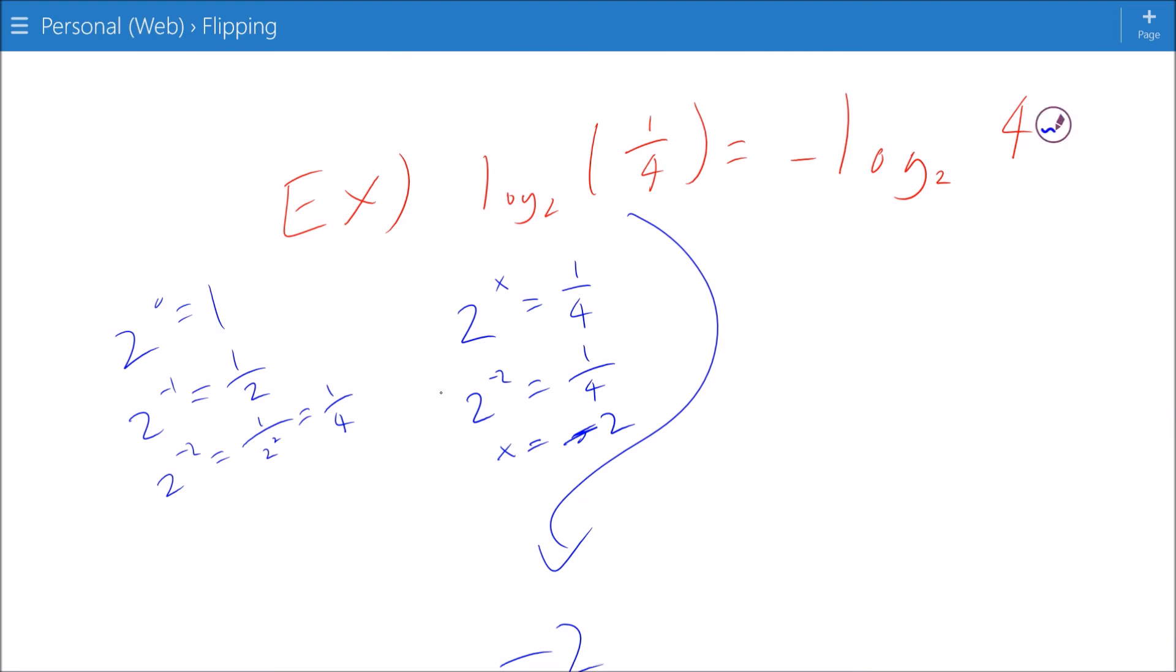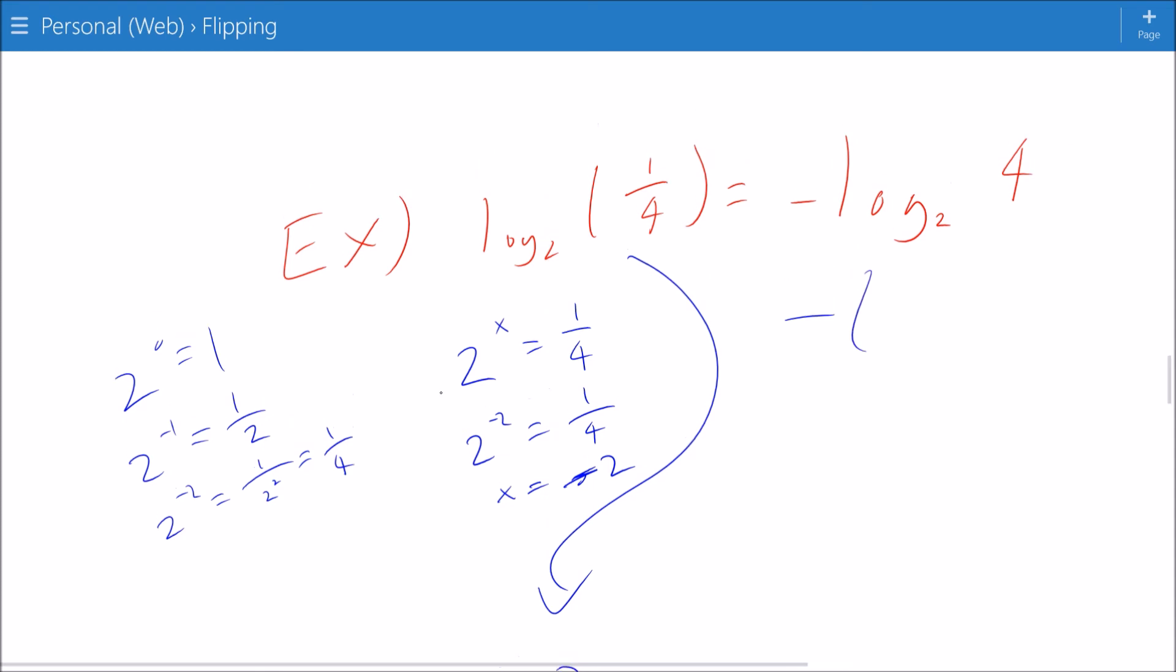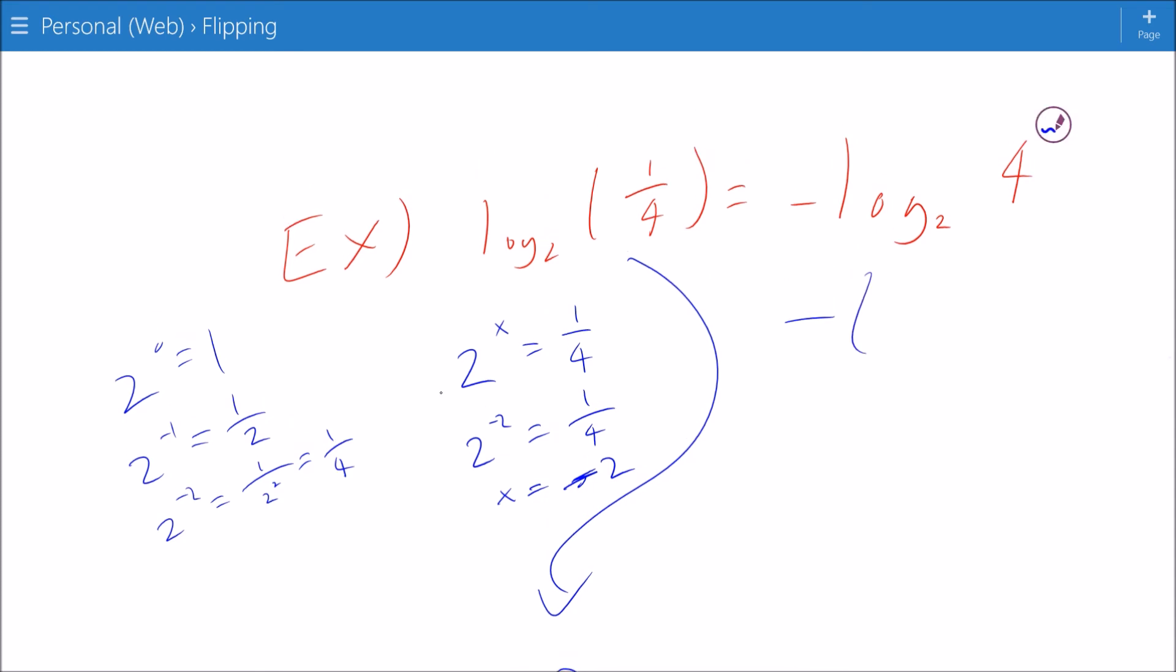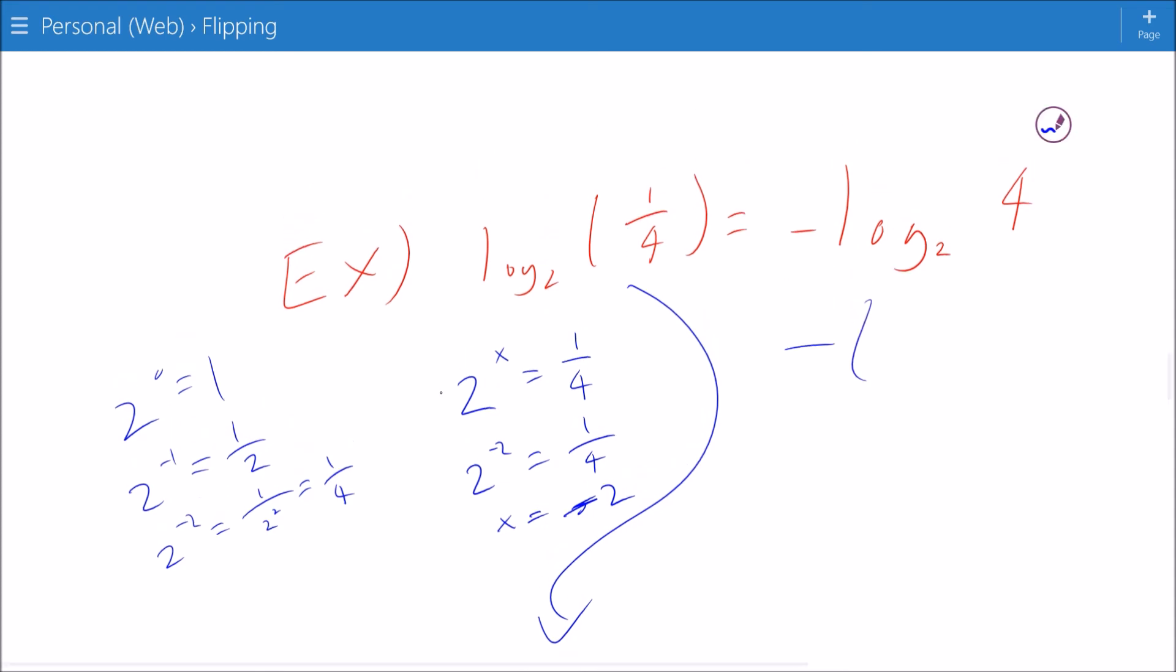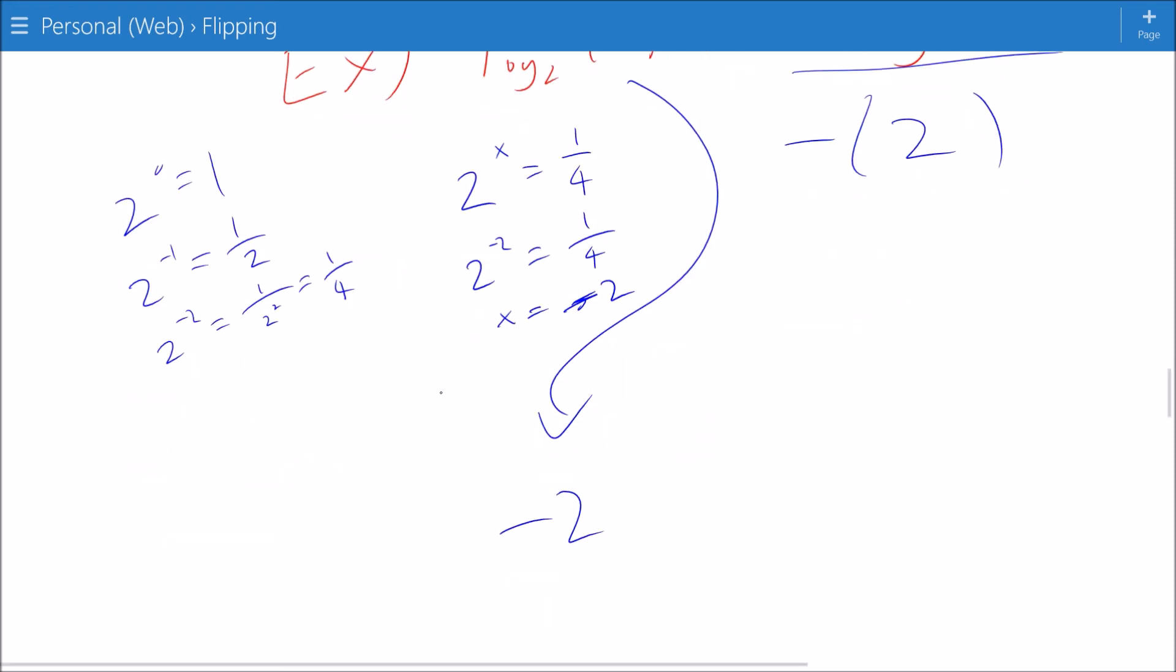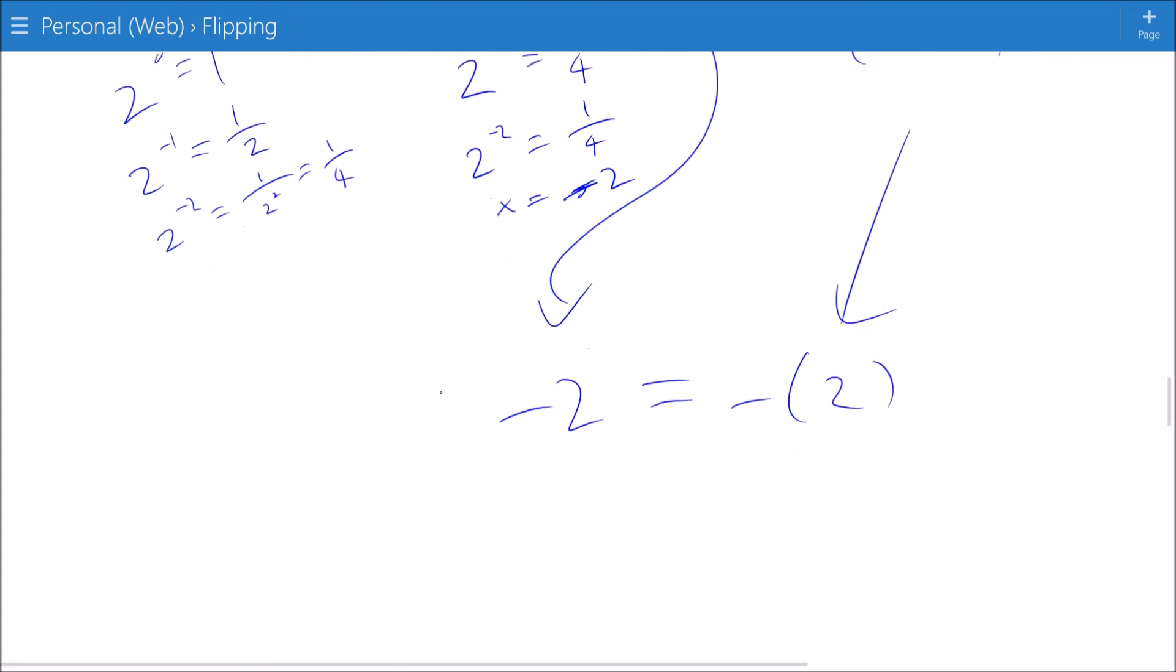And then let's look at the right side here. Negative. What is log base 2 of 4? That tells me that 2 to some power x is equal to 4. I know that 2 squared equals 4, therefore x equals 2. That's the value of this logarithm. Bring that down. So negative 2 is equal to negative 2, and we see that this is equal. This holds true.